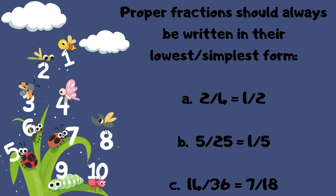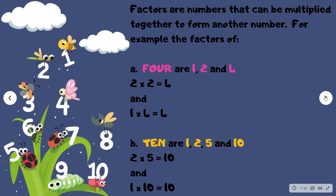And if you have 14 over 36, your final answer should be 7 over 18. How do we do this? Well, factors are numbers that can be multiplied together to form another number.